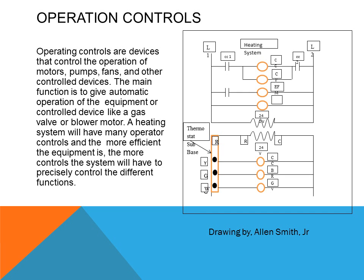Operating controls are devices that control the operation of motors, pumps, fans, and other controlled devices. Controlled devices are anything that consumes energy such as motors, pumps, fan motors, relay coils, and contactor coils. The main function is to give automatic operation to the equipment or control device like gas valves or blower motors. A heating system will have many operator controls, and the more efficient the equipment is, the more controls the system will have to precisely control the different functions.